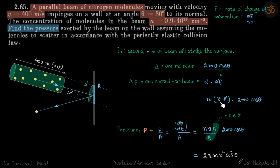So volume is V into A dash. A dash is the cross-sectional area of the beam. So n into volume is total number of molecules hitting the wall in one second, times delta P is change in momentum for one molecule. So n delta P is total change in momentum in one second for the beam.